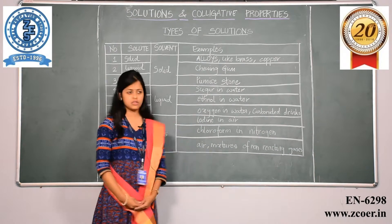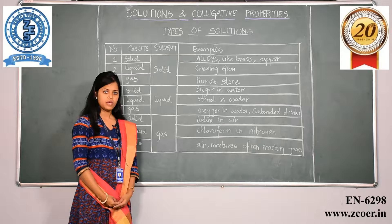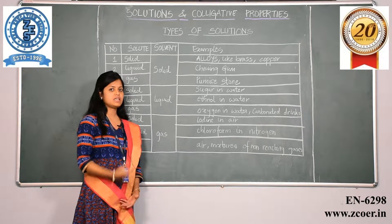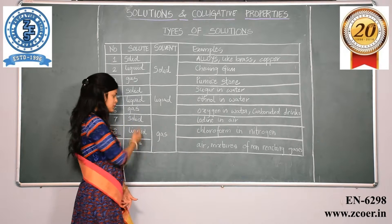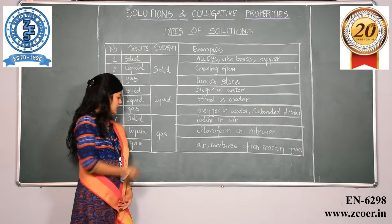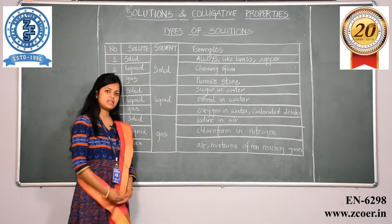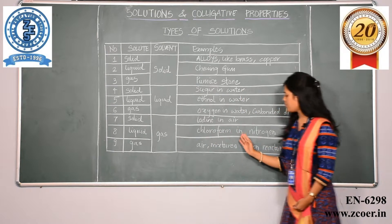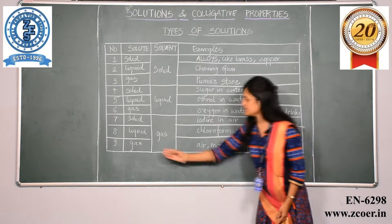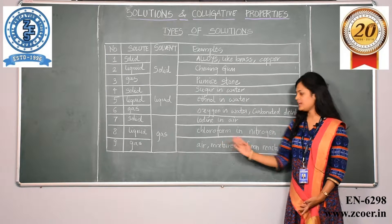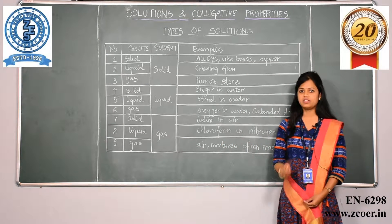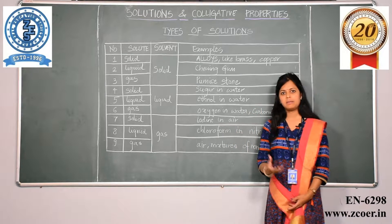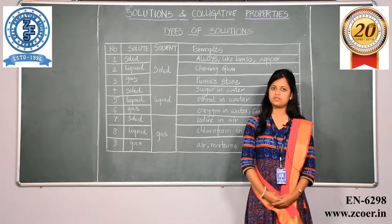The next type is gas-type solutions, where we can have solid in gas — for example, iodine in air. Liquid in gas is the next type, whose example is chloroform in nitrogen. The last type is gas in gas, which is air — mixtures of non-reacting gases. So these were the types of solutions depending on the nature of the solvent.